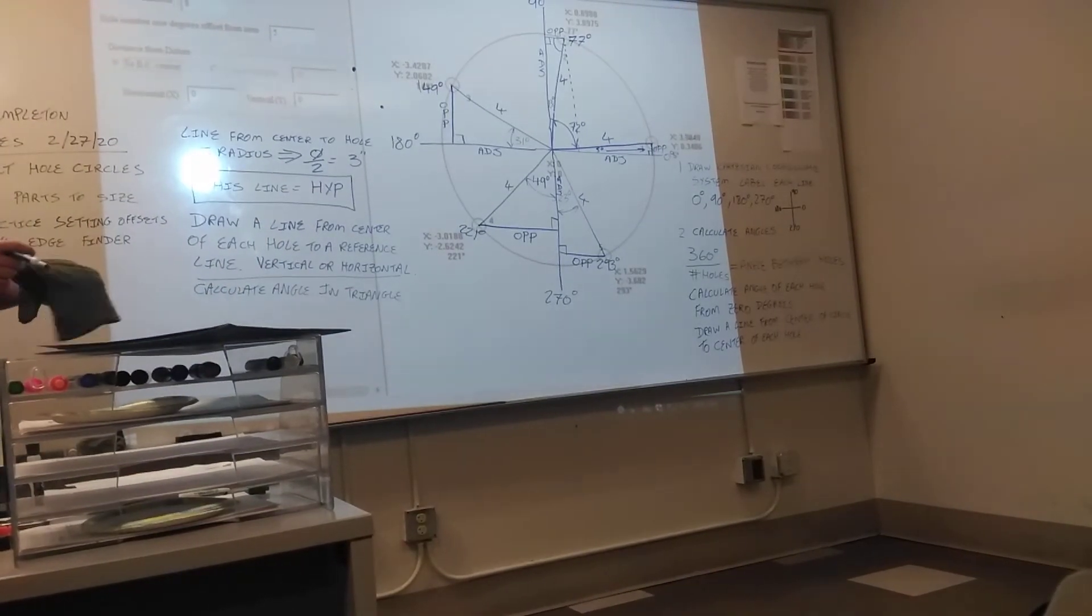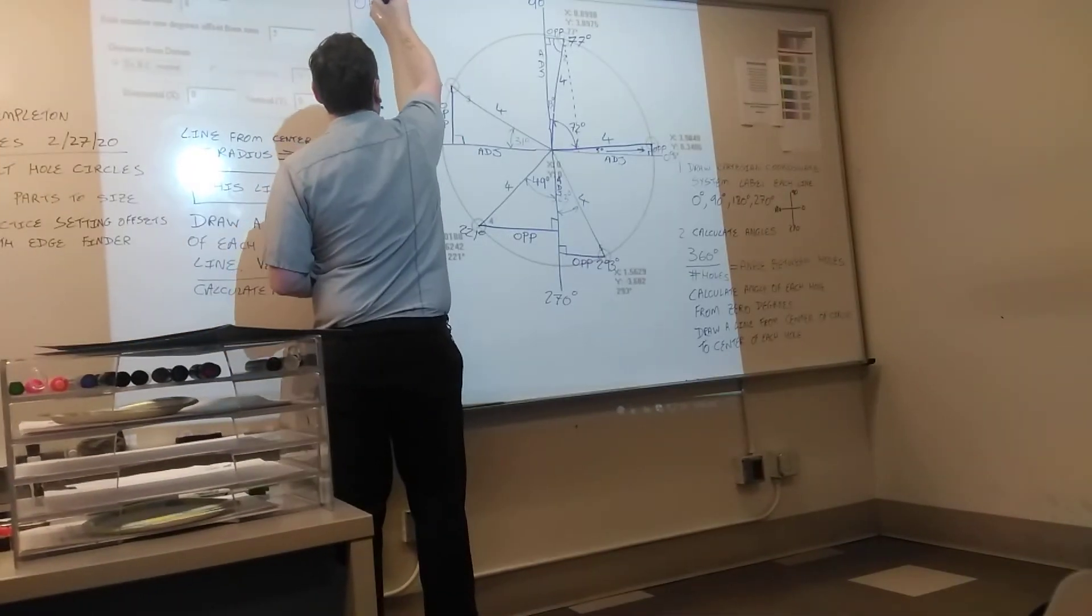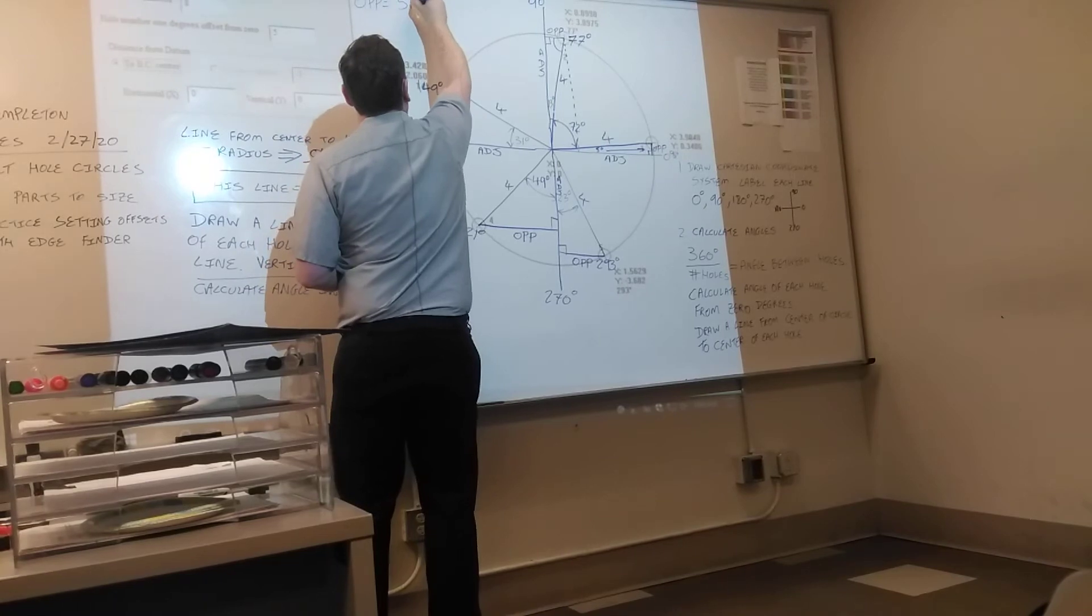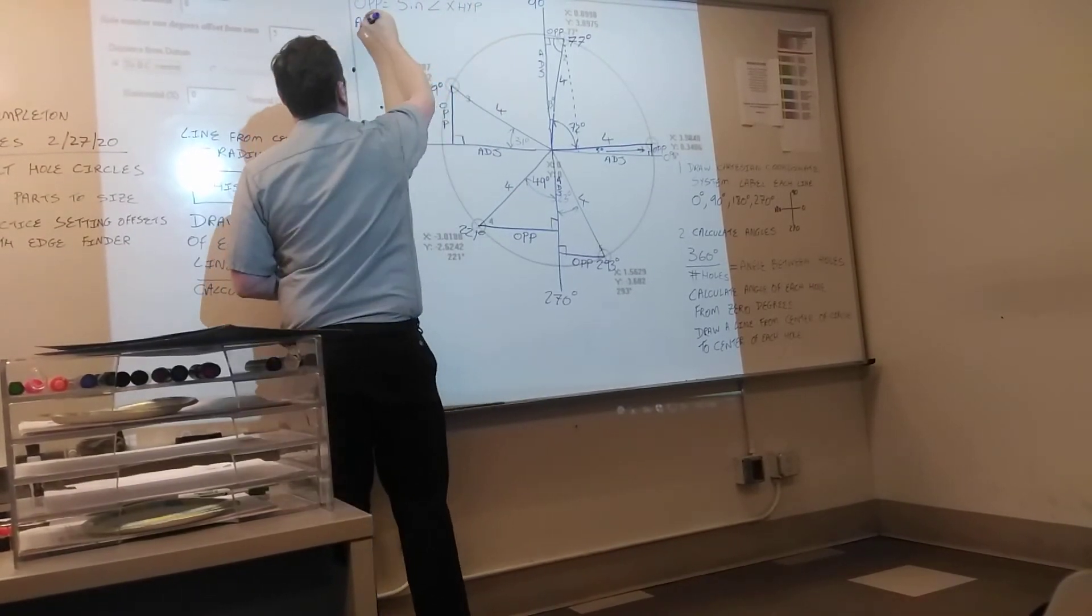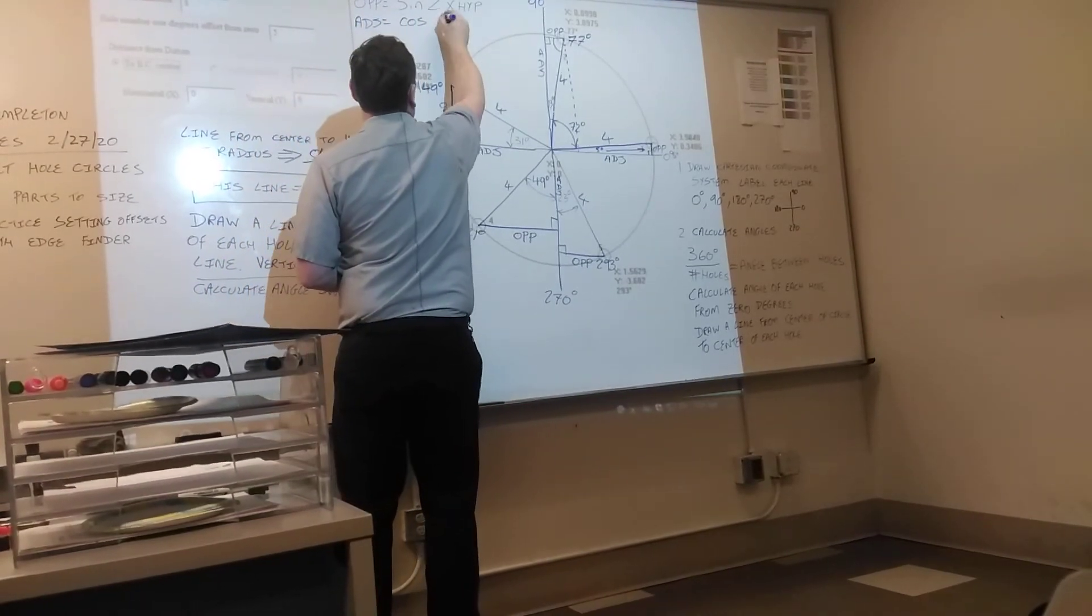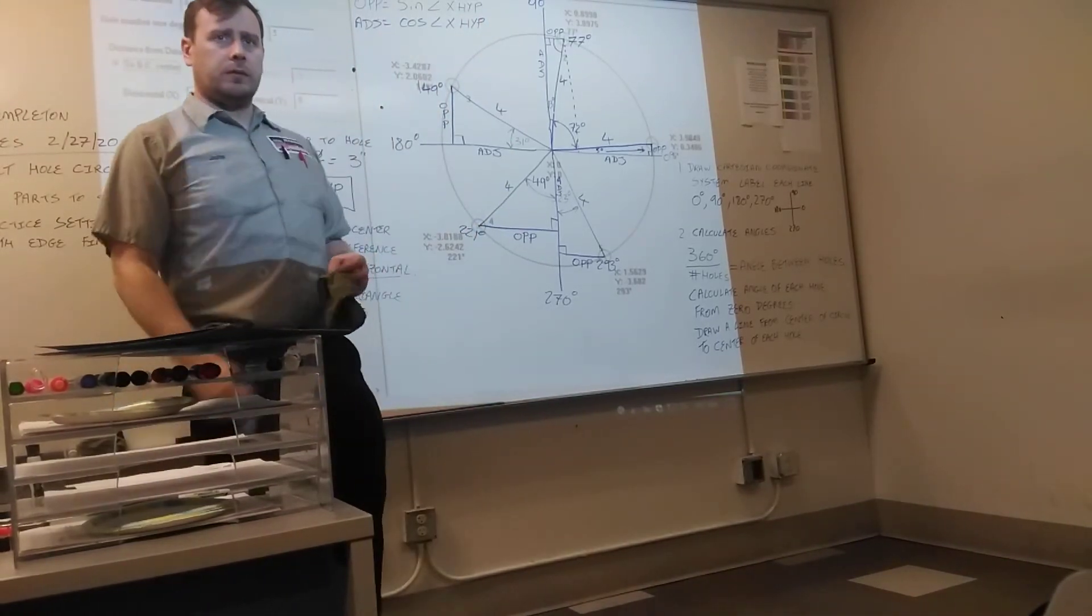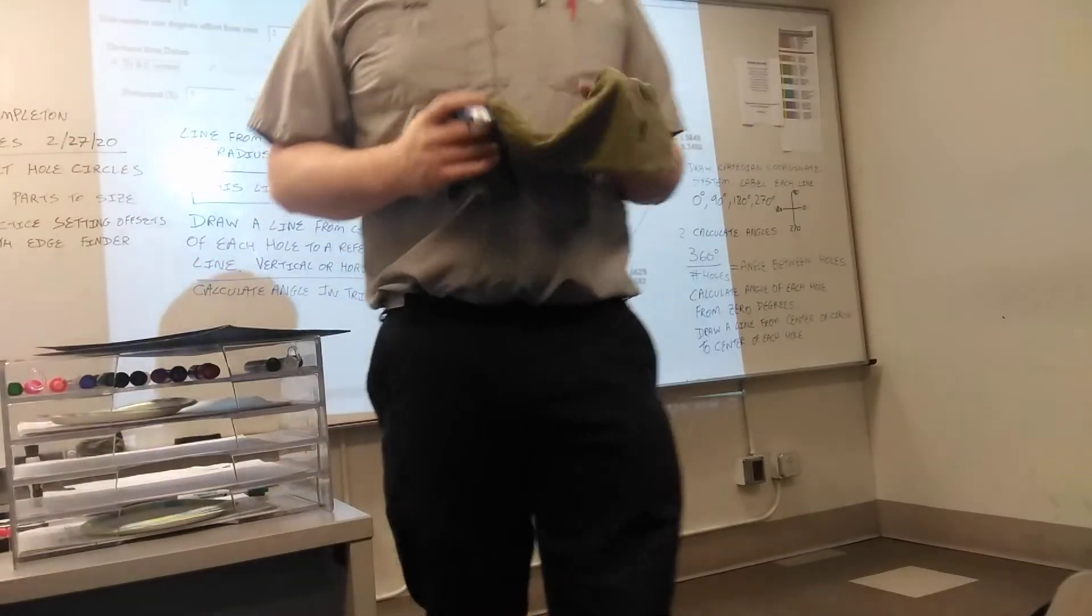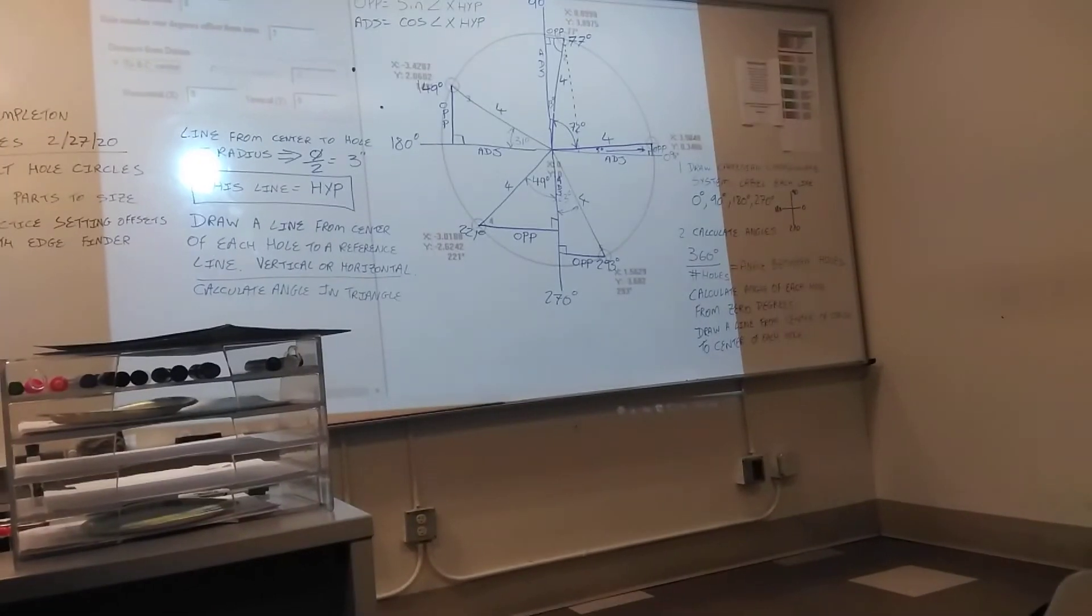So what are the only two formulas you're going to use? Sine of the angle times hypotenuse. And cosine of the angle times hypotenuse. So what do you need to make sure of? You put the x and the y correctly. And put the negative sign if you need it.